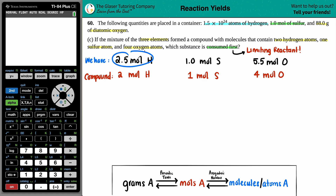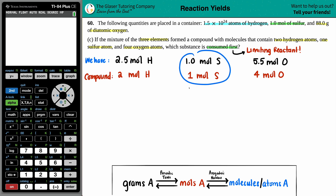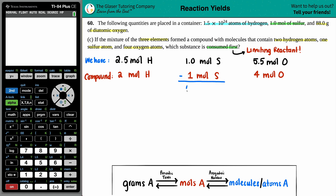So we have 2.5 moles of hydrogen, one mole of sulfur, and 5.5 moles of oxygen. The compound needs from our stock: two moles of hydrogen, one mole of sulfur, and four moles of oxygen. Do I have enough to take away two moles of hydrogen? Yes, I have extra. For the one mole of sulfur, I exactly have one mole. So once that one mole gets taken away, I will have zero moles of sulfur left.